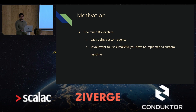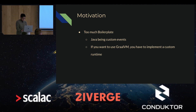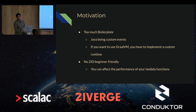Also, if you want to use GraalVM for your Lambda functions, you have to implement a custom runtime yourself because AWS doesn't provide it for you. Another problem is that using the Java runtime is not ZIO beginner friendly, as we are going to see later, because if you use it wrong, you can affect the performance of your Lambda function.